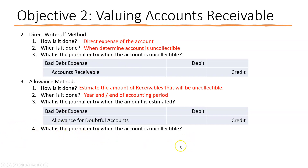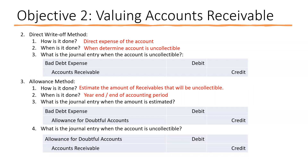When you do identify a specific uncollectible account under the allowance method, you don't record the expense again since it was already estimated. Instead, you debit allowance for doubtful accounts and credit accounts receivable. The net receivables before and after this write-off stay the same because you're reducing both the allowance and the receivables by equal amounts.